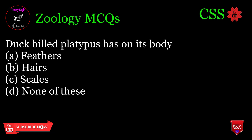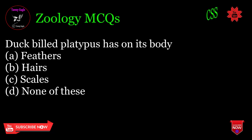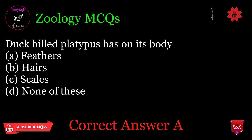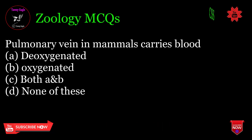Duck-billed platypus has on its body: A. Feathers, B. Hairs, C. Scales, D. None of these. Correct answer: A.